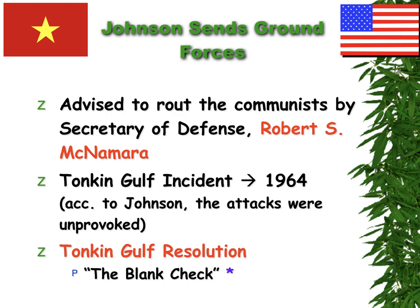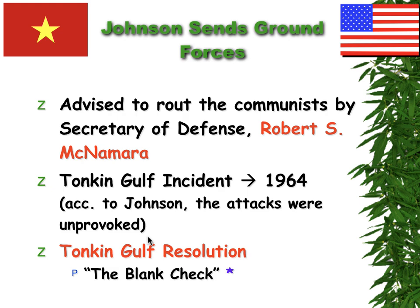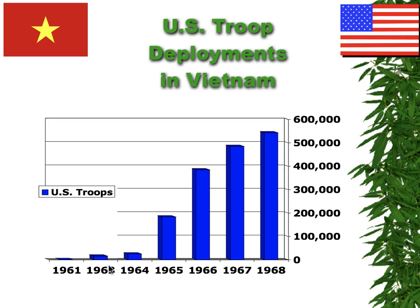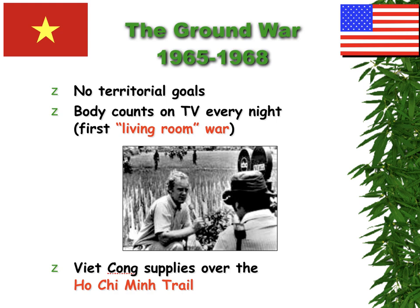The number of troops continues to go up. The Gulf of Tonkin incident gives the president far more authority as commander-in-chief — that's very important to understand. Starting with Kennedy but going into LBJ, look at how the number of troops deployed to Vietnam continues to increase. It started out as a ground war, and you did start to see fighting.